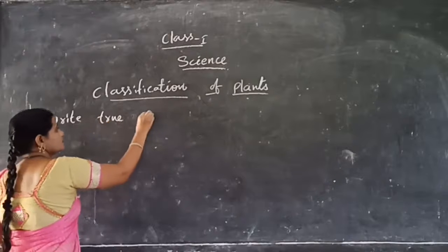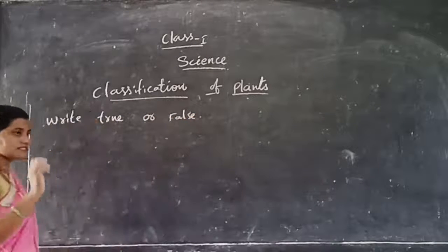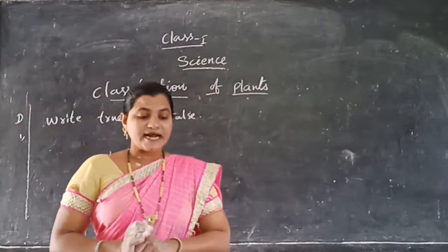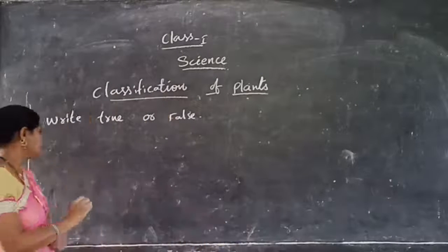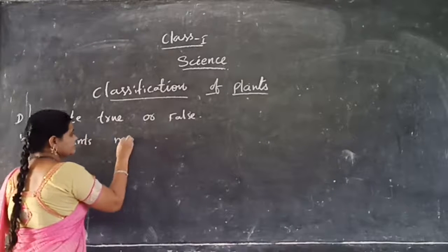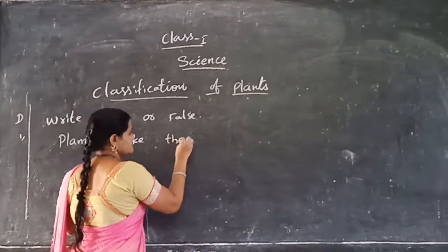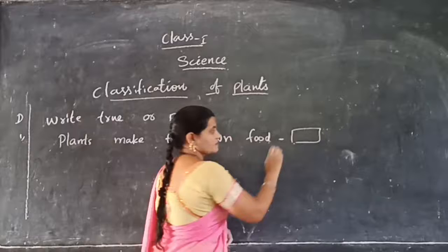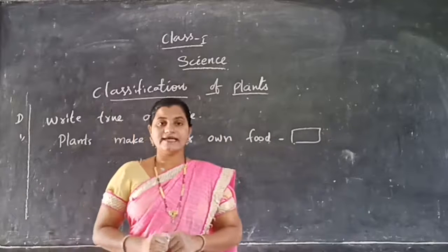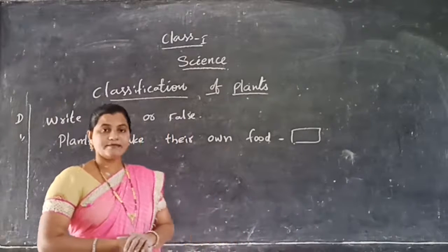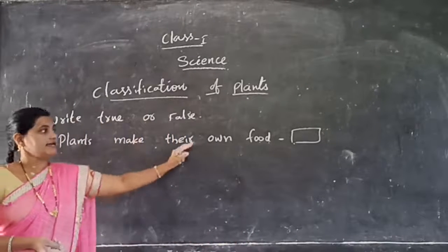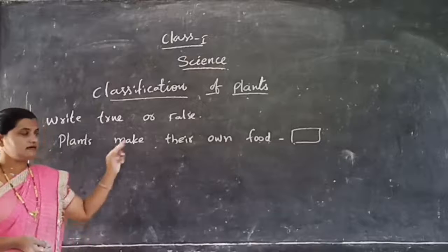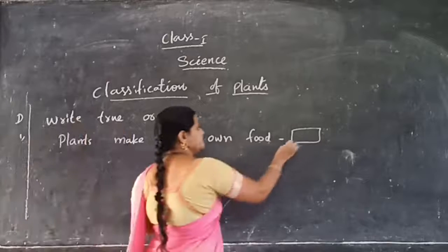Plants make their own food. That is the first statement. We already know this statement is correct. While I taught the lesson, I said plants make their own food by themselves using sunlight, air, and water. So this is a true statement — write true.